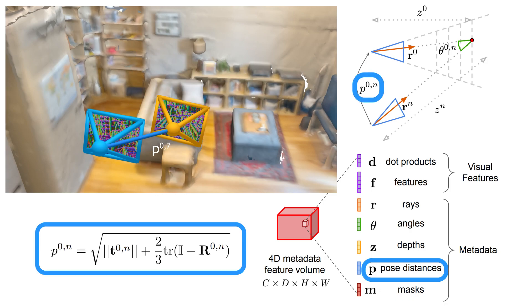Some source cameras may be more informative than others depending on the depth plane being scored. To that end, we also include information on the relative pose between each source camera and the current camera explicitly, and implicitly by ordering source view channels by this pose distance.